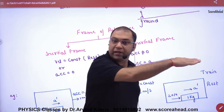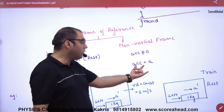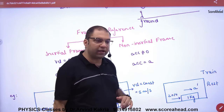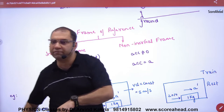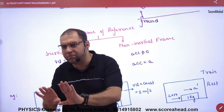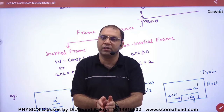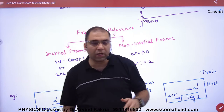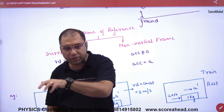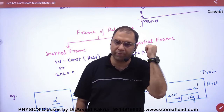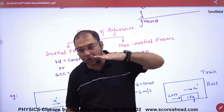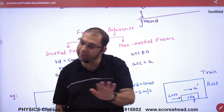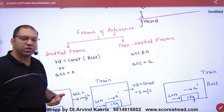If the train is accelerating, the acceleration is non-zero — that frame is a non-inertial frame. So inertial frames have acceleration equal to zero, and non-inertial frames have acceleration that is non-zero. If an aeroplane is accelerating, it is non-inertial. If an aeroplane is running at constant velocity, its acceleration is zero, so it is inertial. Is the point clear?